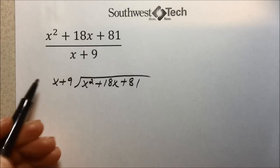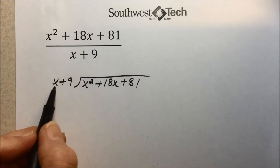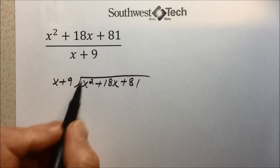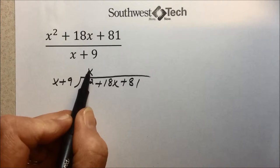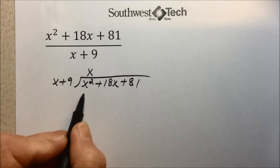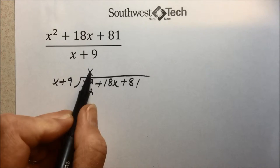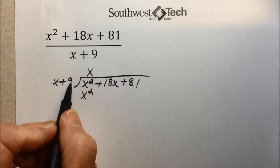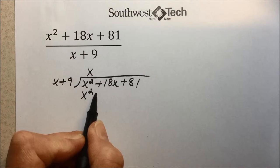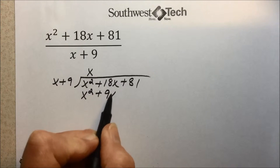And similar to working with numbers, we'll start with our leading term of our divisor. X times what gives us this first value here? We'll need an x. x times x is x squared. We need a distributive. x times 9, since we have a second term here, is 9x. And we'll place that underneath this similar term.